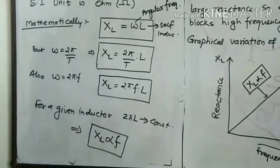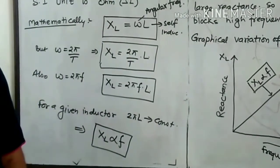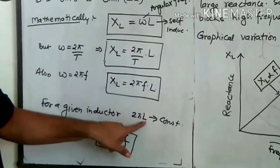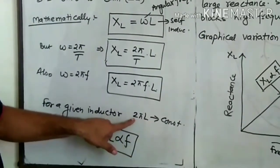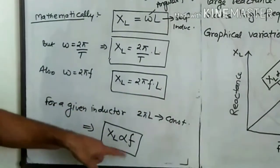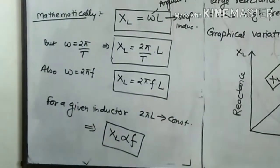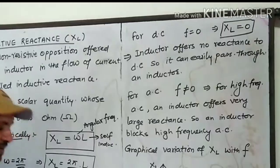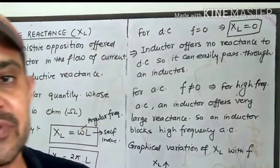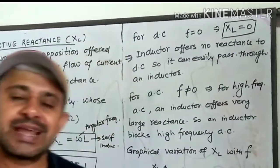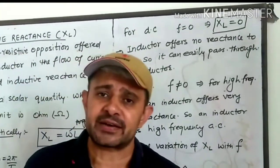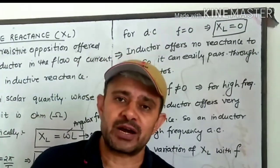For a given inductor of constant value, 2π and L are both constants, so we can say XL is directly proportional to f. Any inductive reactance is directly proportional to frequency — more frequency means more inductive reactance, and less frequency means less inductive reactance. Now we shall study the behavior of an inductor with two types of currents.